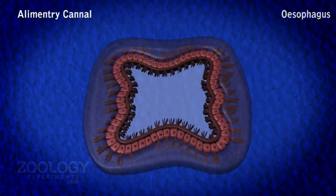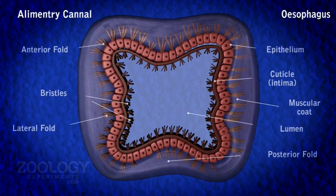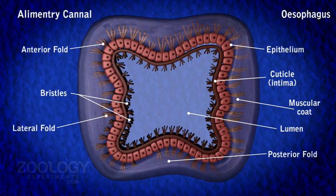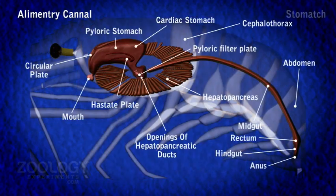Esophagus. The short tubular esophagus runs vertically upward from the buccal cavity to the floor of the cardiac stomach. Internally, the thick muscular wall of the esophagus is thrown into four prominent longitudinal folds: one anterior, one posterior, and two lateral.